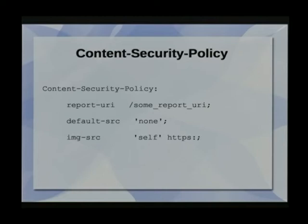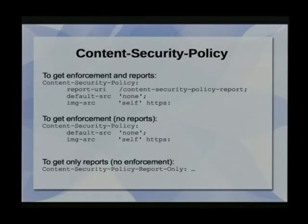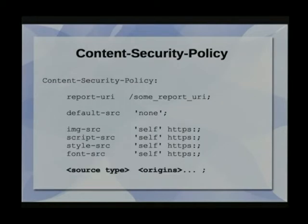What does it look like? It's one long line, just wrapped. You set where your UI should be allowed to come from, and different kinds of sources or image sources. It could look different ways to get enforcement with or without reports, or to get no enforcement at all. It could look quite long. Basically, it has a source type and origin.